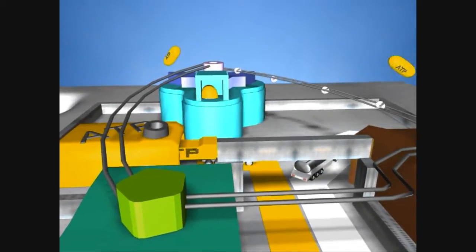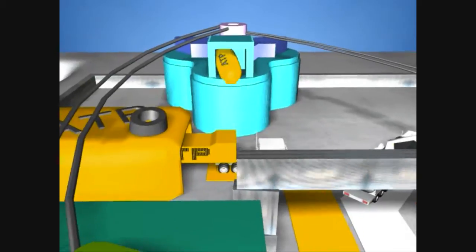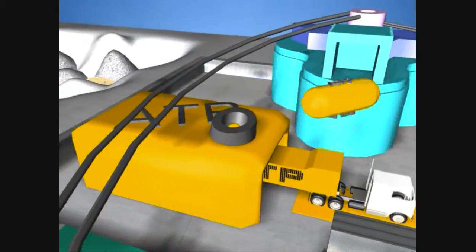The electron transport system leaves us with a grand total of 32 ATP in some areas and 34 ATP in others.